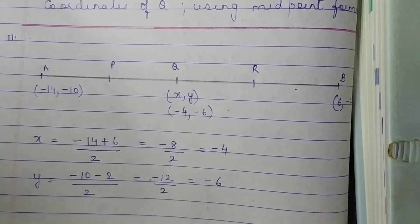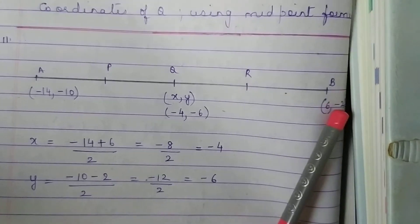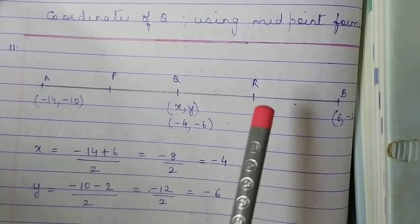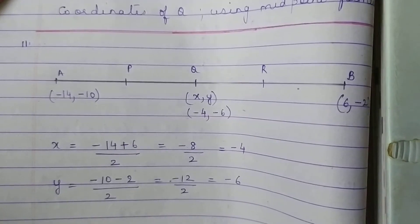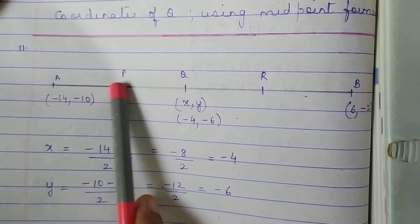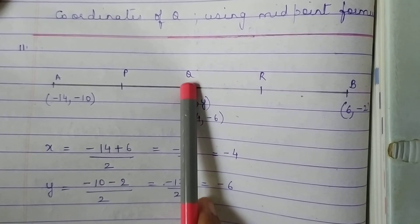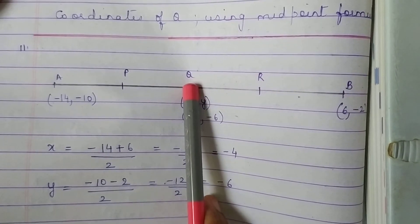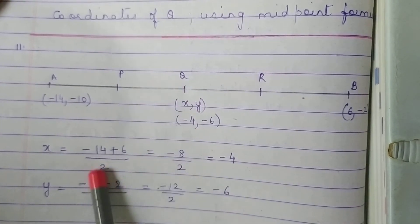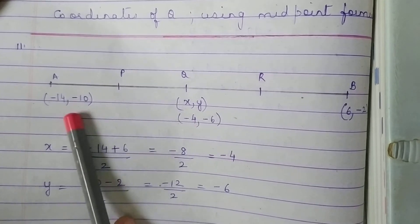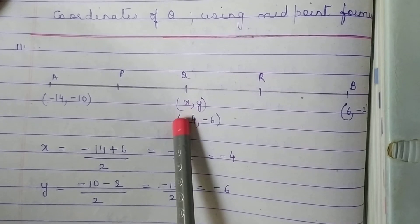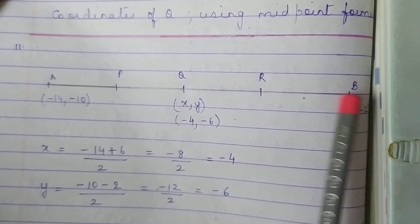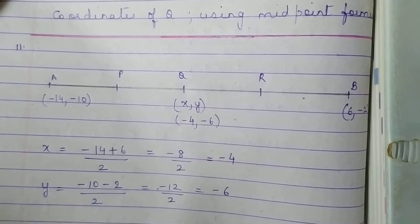Next is question number 11. A(-14, -10) and B(6, -2) are given. Find the coordinates of the points which divide segment AB into four equal parts. It is divided into four parts with points P, Q, R. Q will be exactly the center of AB, so use the midpoint formula: (minus 14 plus 6) by 2 gives minus 4, and (minus 10 plus minus 2) by 2 gives minus 6. So Q is (-4, -6). Then use the midpoint formula for A and Q to get P, and midpoint formula for Q and B to get R.